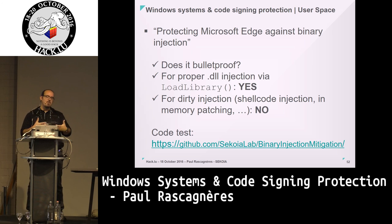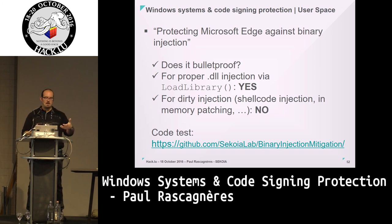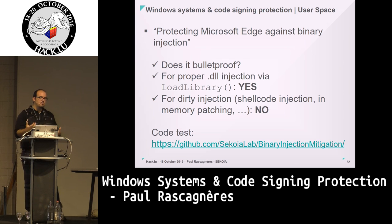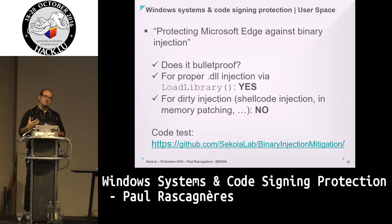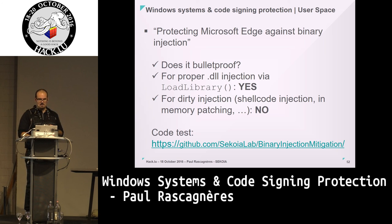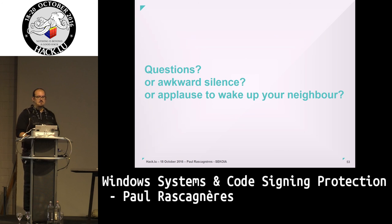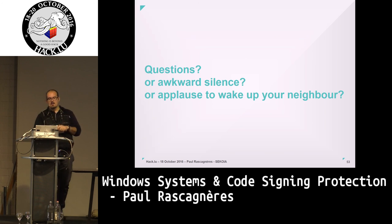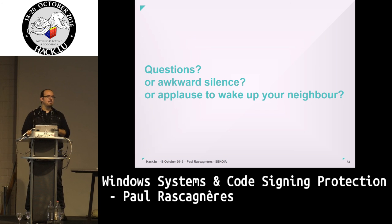Basically that covers the two ways of protection: kernel space — how malware developers bypass it — and the new userland approach and implementation of Windows signatures. If you have questions feel free to ask.